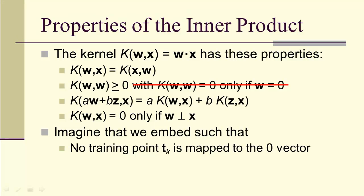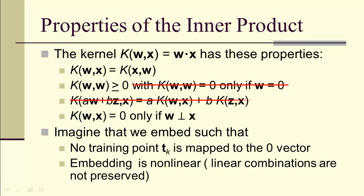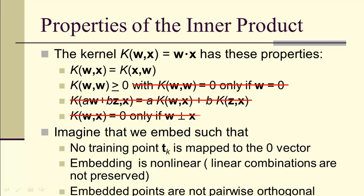The embedding is non-linear, so we're not going to try to preserve linear combinations because we'll be looking at a non-linear embedding that's being used in an inner product. And we're just going to make sure that once we do the embedding, we don't get any orthogonality.